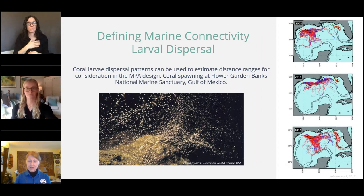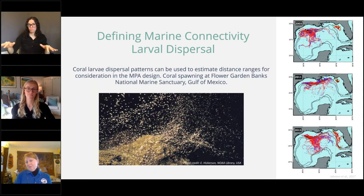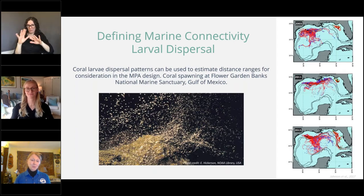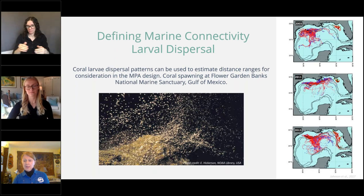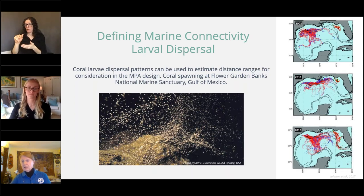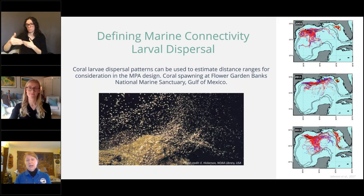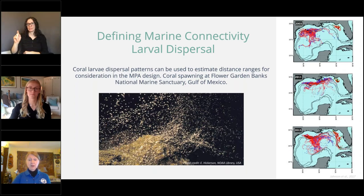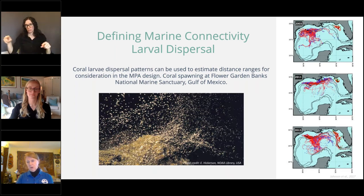Here's another simple illustration — larval dispersal. That is a picture of a snowflake illustration of the larva as it's moving out. You will see on the right three different illustrations of how larva is moving in the Gulf, depending on the year. So there's a variety of circumstances with different species, and there is still a lot we do not know in terms of the intensity and survivability of larva. This shows the Flower Garden Banks, which is a national marine sanctuary in the Gulf of Mexico.